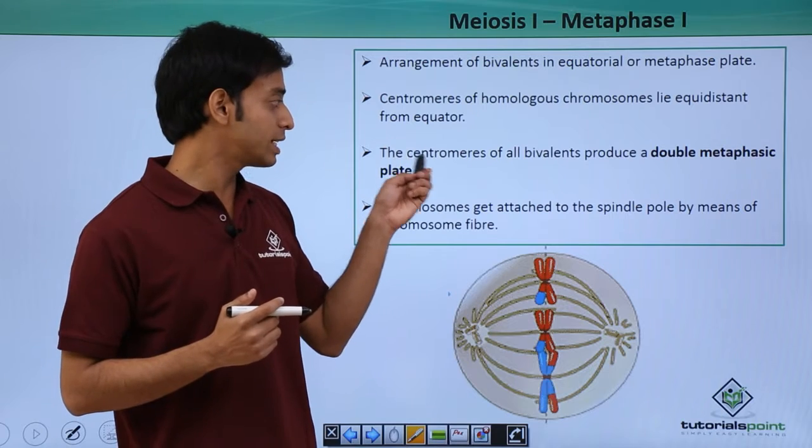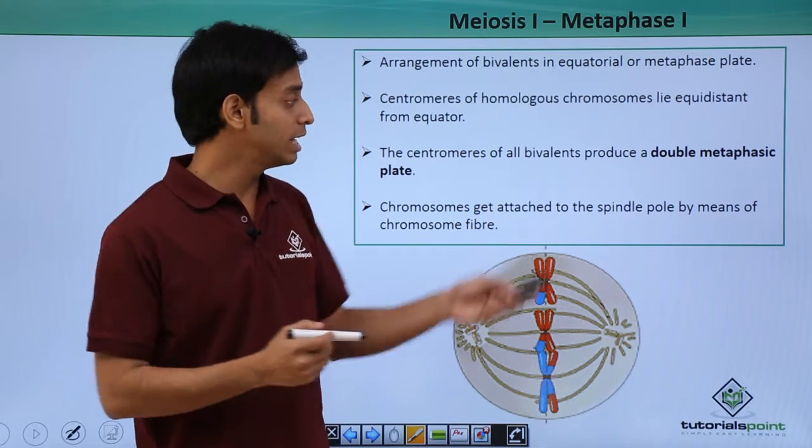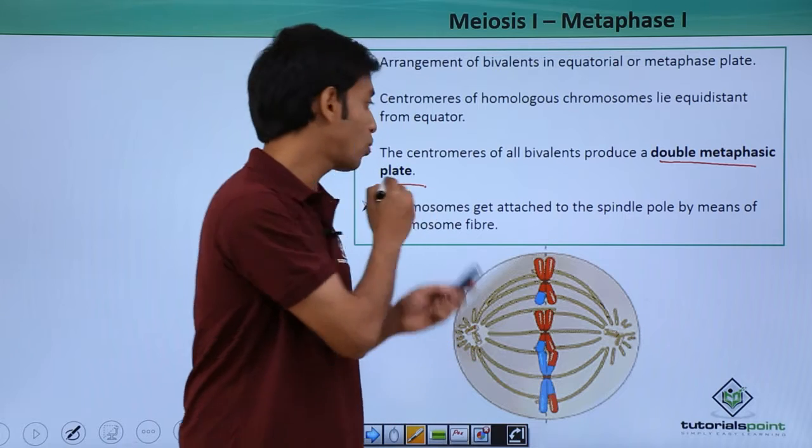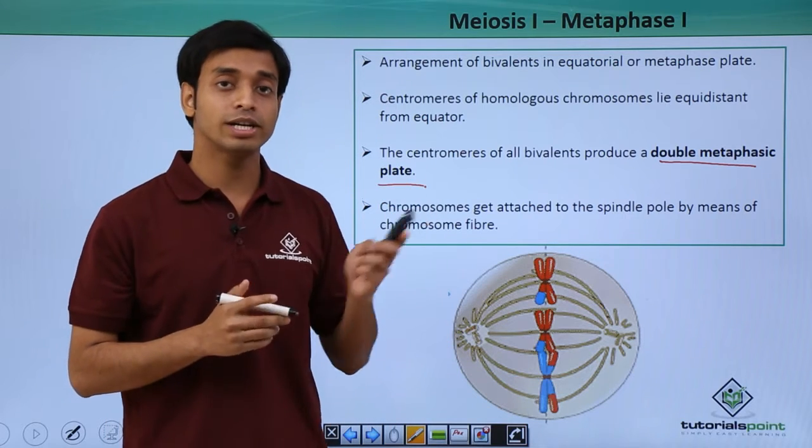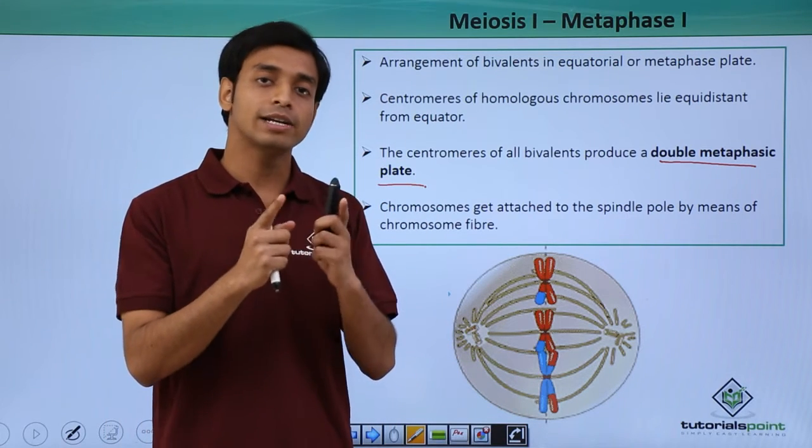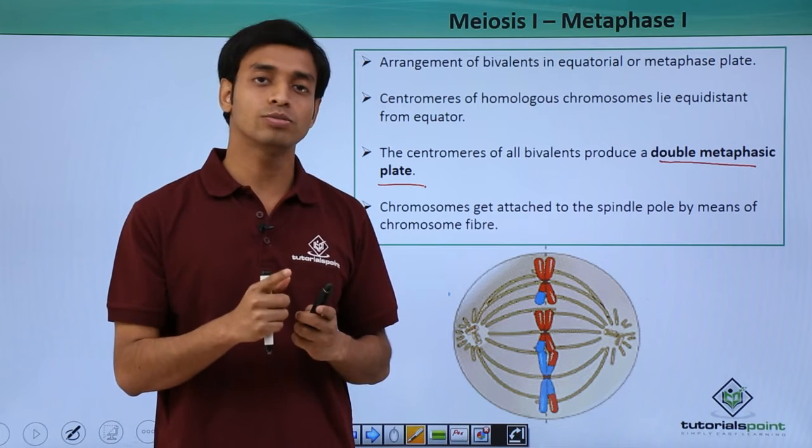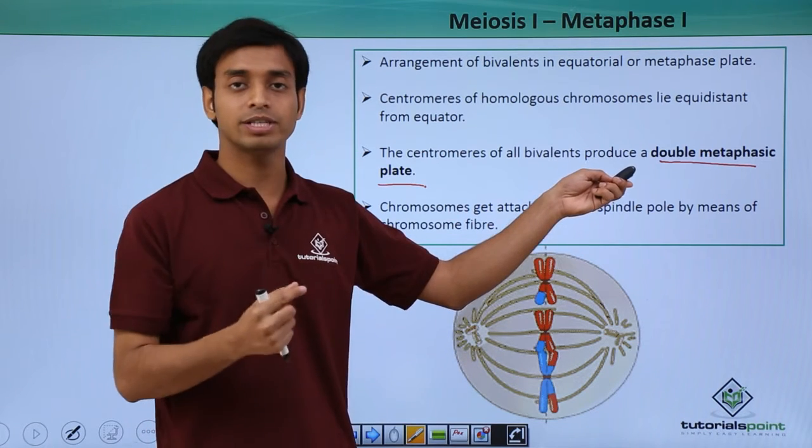Due to this, the centromeres of all the bivalents produce a double metaphasic plate. Why double metaphasic plate? Because there are homologous chromosomes, these two pairs of chromosomes form two plates or metaphasic plates, hence this is known as the double metaphasic plate.